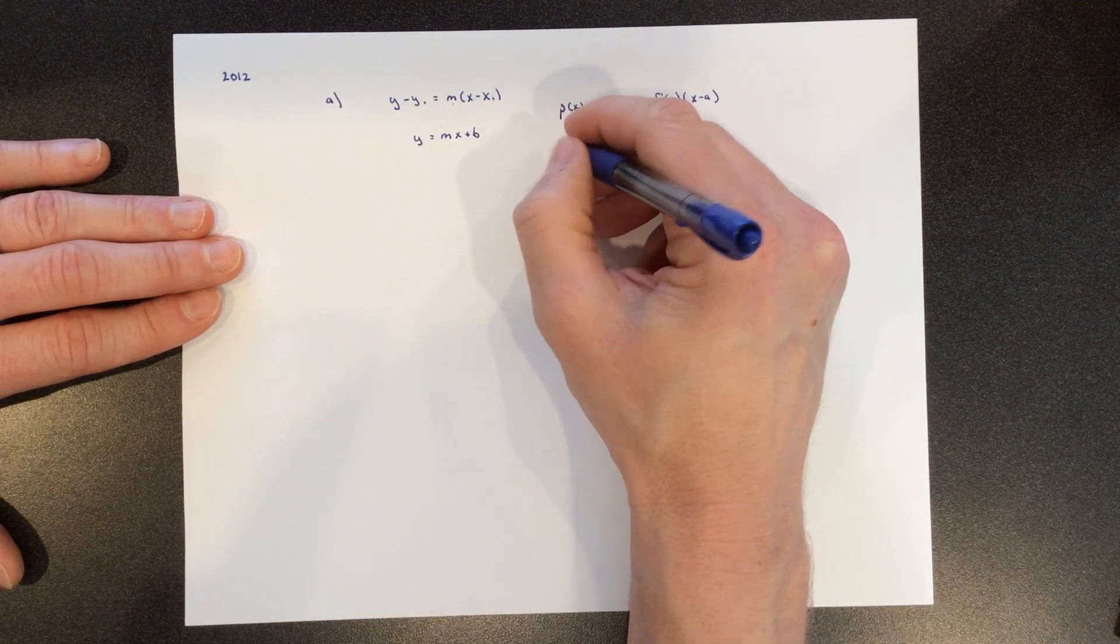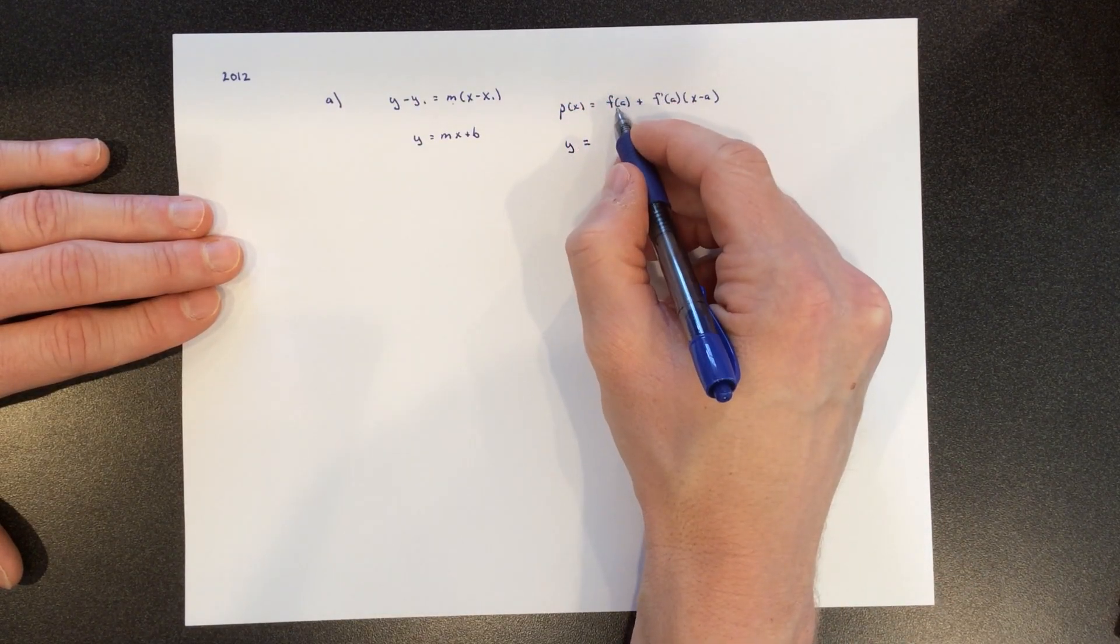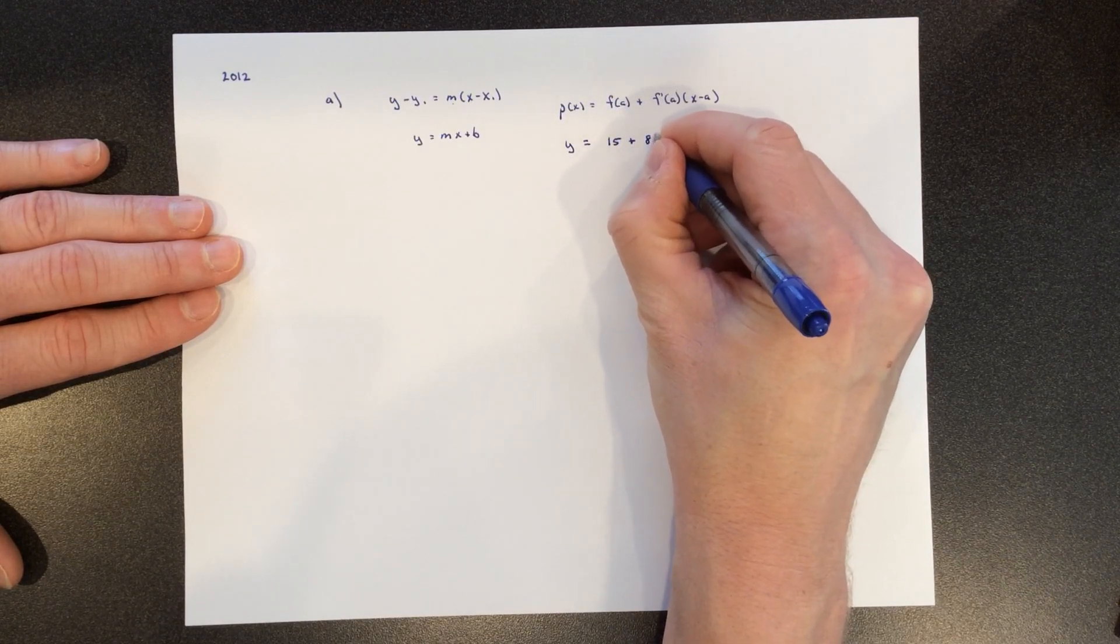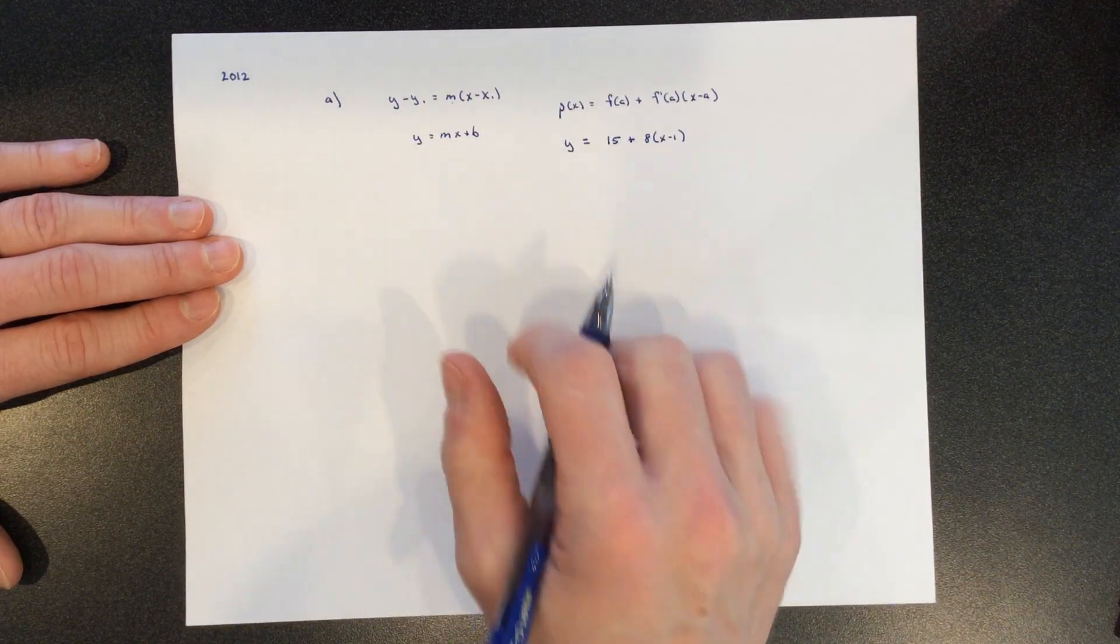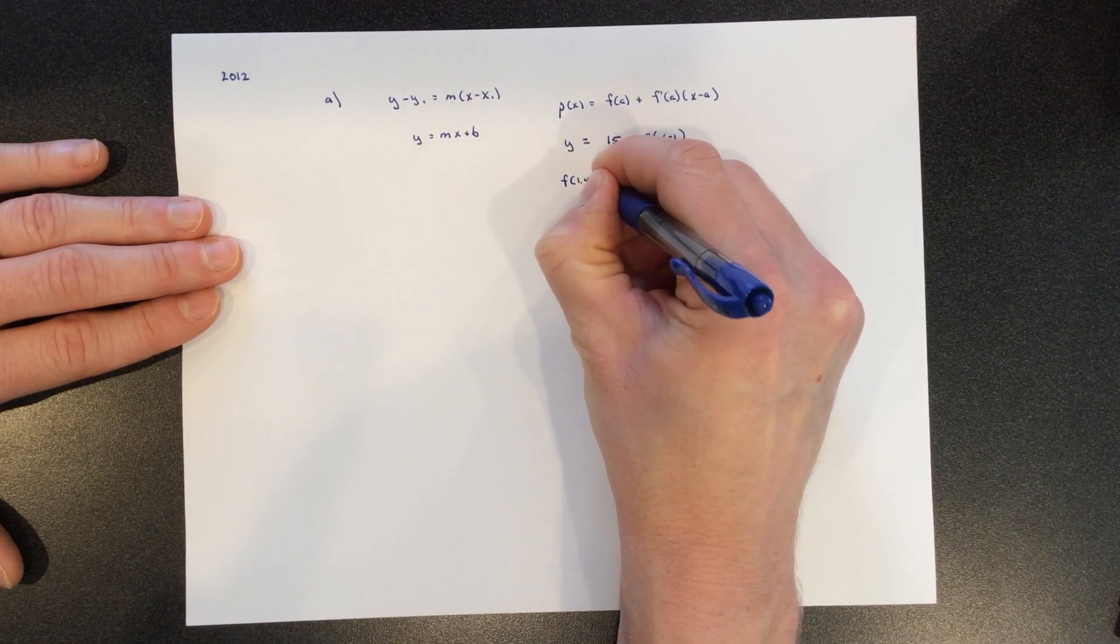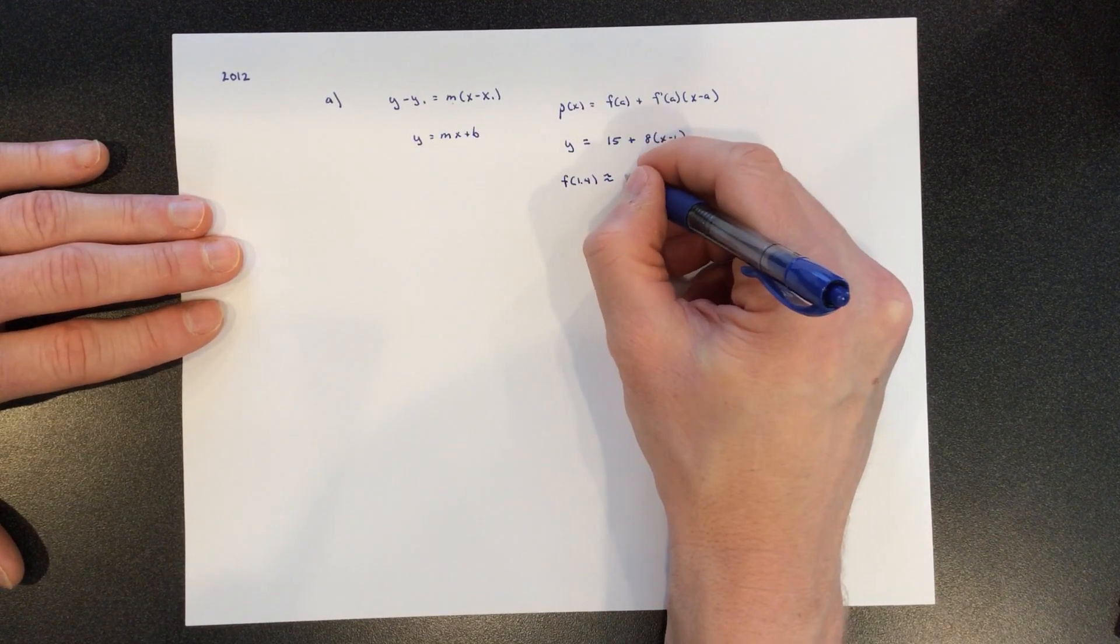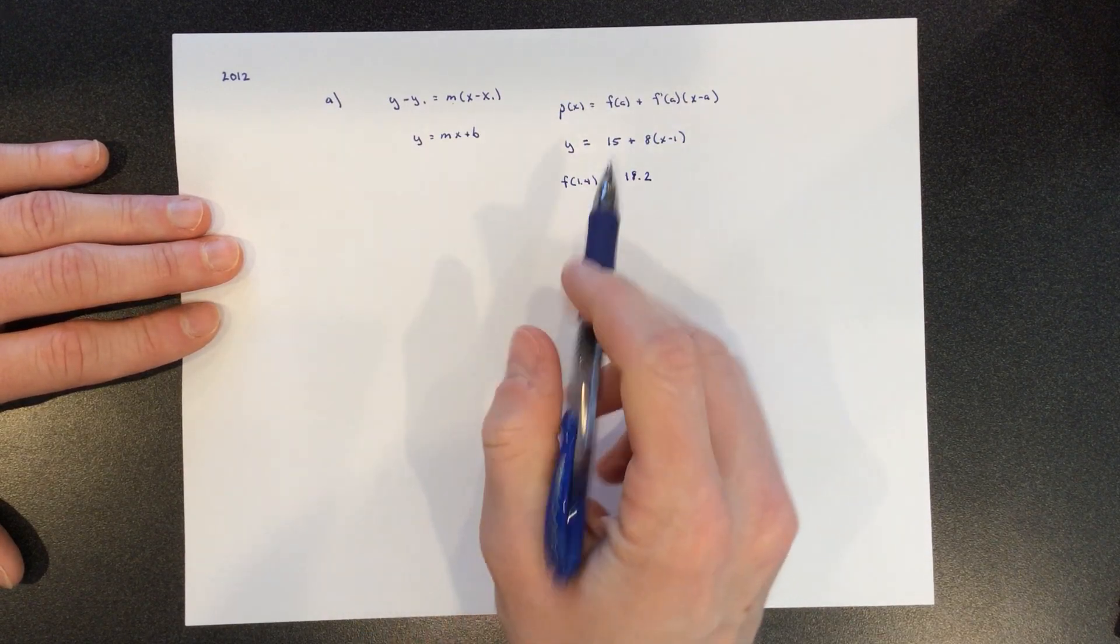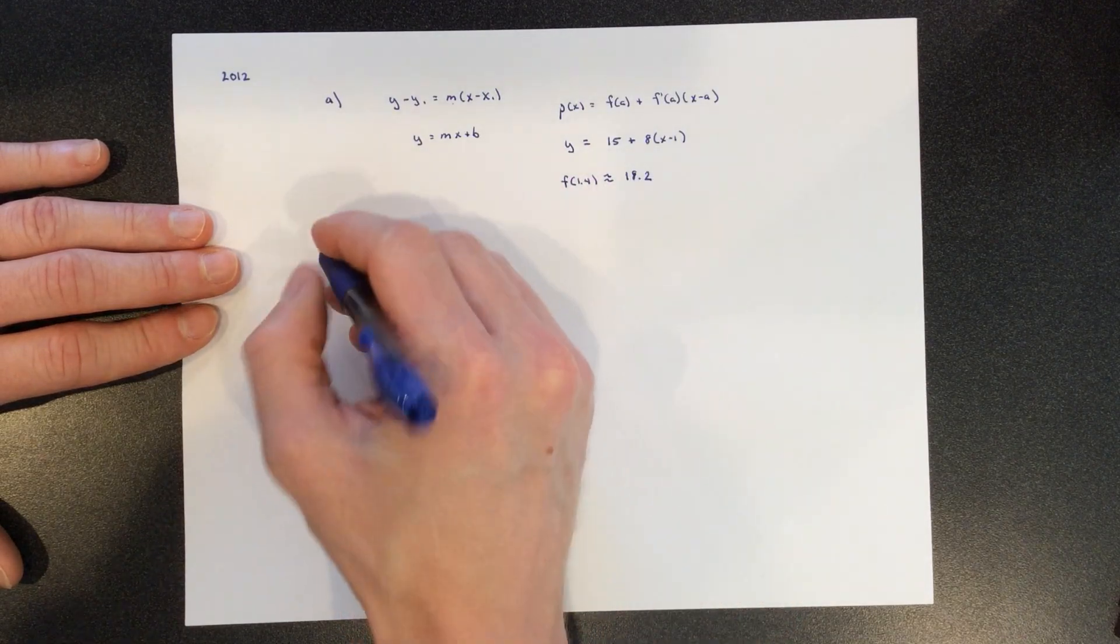So if you tell me that you want to write the equation on the tangent line, and you tell me that you know that the function's value is 15 at 1, and you know the derivative is 8, I can easily write the equation on the tangent line. There you go. I also can estimate f of 1.4 using the tangent line because that's just plugging in 1.4 into here and getting 18.2. Okay, that's part A. Part A wanted you to write an equation of a tangent line and use it to approximate f of 1.4.